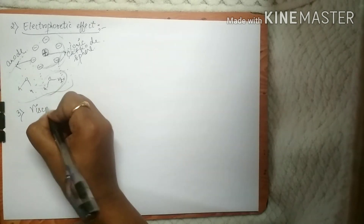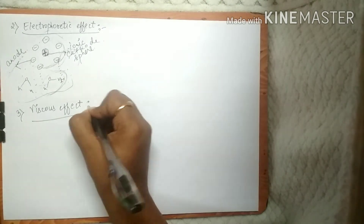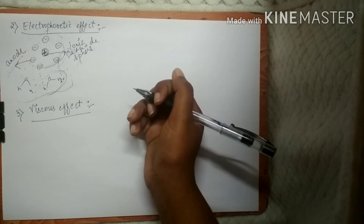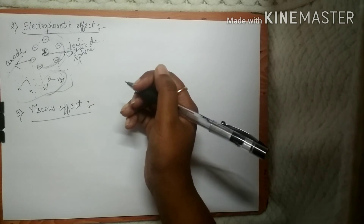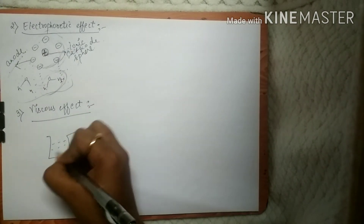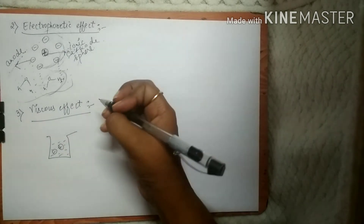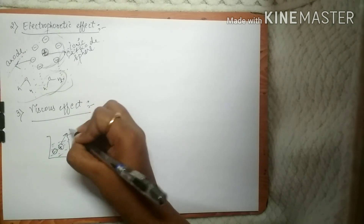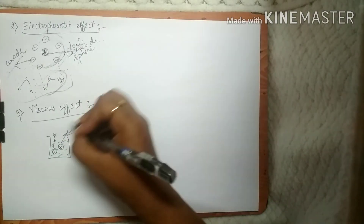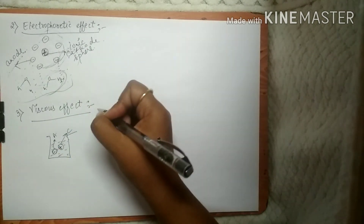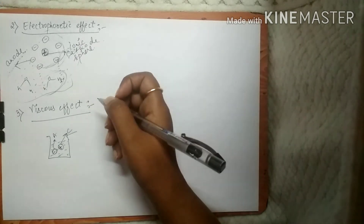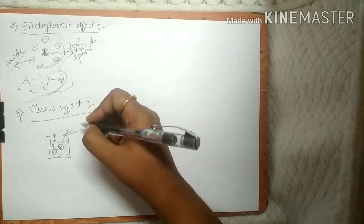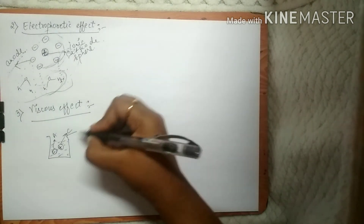The next effect is the viscous effect. It is generated due to the viscous nature of the solvent. If the viscosity of the solvent is more, it will exert a dragging force on the mobility of ions. For positively and negatively charged ions in a viscous solution, it will be difficult to move towards cathode or anode. The electrical force is opposed by the frictional viscous drag of the solvent, and the conductance value decreases.